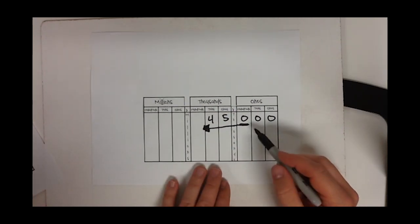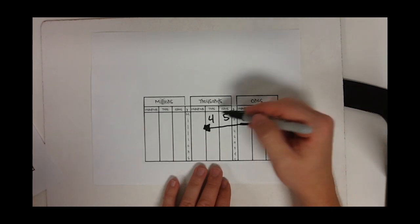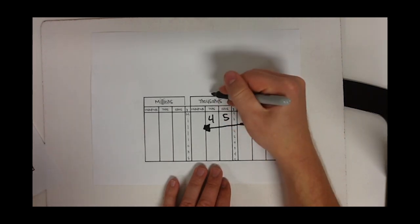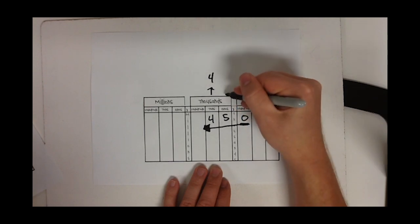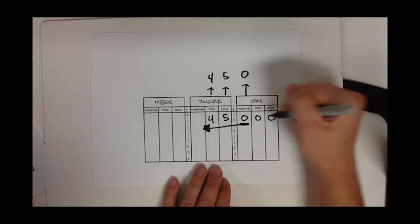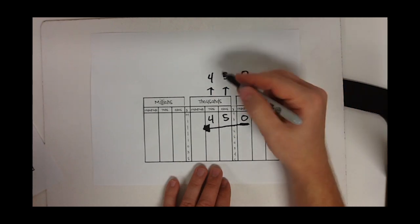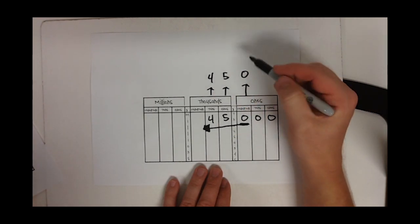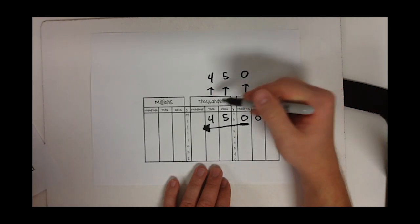So how many hundreds are in the number 45,000? There are 4, 5, 0 - we're not going to include those zeros because they're not underlined. So there are 450 hundreds in 45,000.